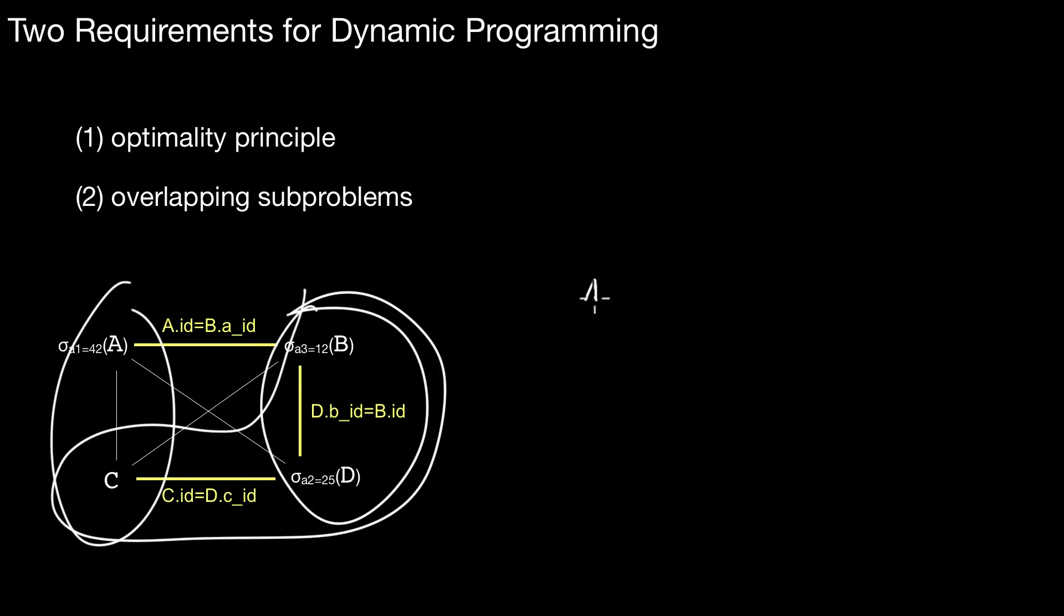You see those overlapping subproblems if you depict the dependencies. Let's assume we only had three input relations. So what are the different combinations? You could do an A, B join first and then join with C. You could do a B, C join first and then join with A. Or you could do something like A, C. And of course, all of those have to access the individual tables. So this one has to access A and B. There is a dependency. This one has to access B and C. This one has to access A and C.